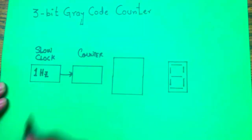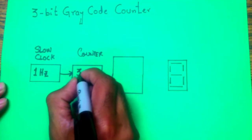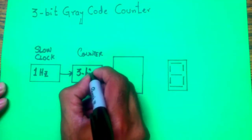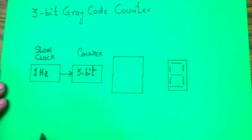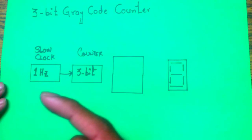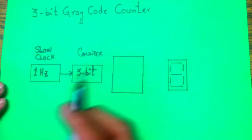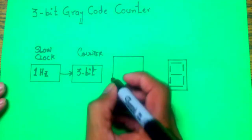The slow clock feeds into a counter. Because this is a 3-bit gray code counter, it will be a 3-bit counter counting from 0 0 0. After one second it goes to 1, then increments by 1 every second, and once it reaches 7 it rolls over.